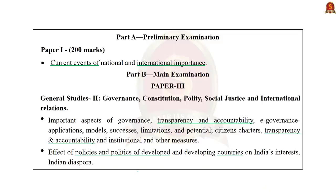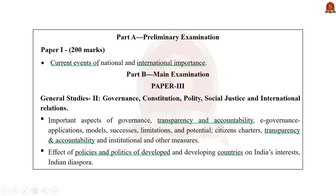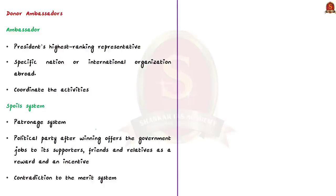At present, US President Joe Biden is in the process of filling thousands of high-level posts, and the Senate has begun confirming various names. Donor ambassadors who paid money to the party have also begun asserting claims for superior positions. The author discusses the misuse of ambassadorship and unfair practices in the United States, while discussing India's system of appointing ambassadors positively. An ambassador is the president's highest-ranking representative to a specific nation or international organization abroad, coordinating activities of foreign service officers and other agency representatives.